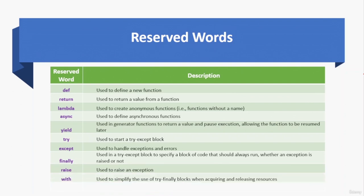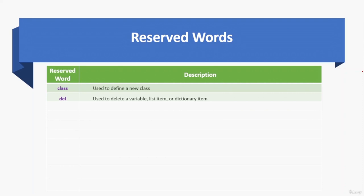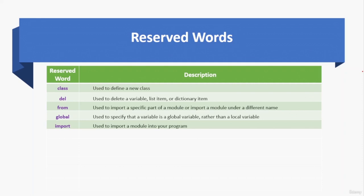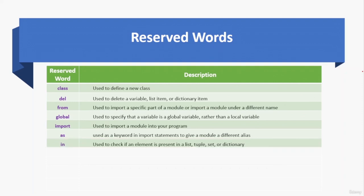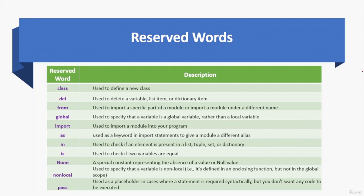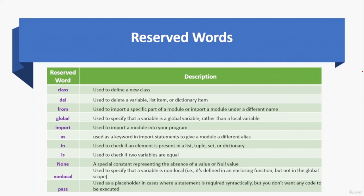'with' simplifies the use of try-finally blocks when acquiring and releasing resources. 'assert' is used for debugging — it checks if a condition is met and raises an error if not. 'class' defines a class. 'del' deletes a variable, list item, or dictionary item. 'from' imports a specific part of a module. 'global' specifies a global variable. 'import' imports a module, 'as' gives a module a different alias. 'in' checks if an element is present in a list, tuple, set, or dictionary. 'is' checks if two variables are equal. 'None' represents the absence of a value. 'nonlocal' specifies a variable defined in an enclosing function. 'pass' is a placeholder where a statement is required syntactically but you don't want any code executed.